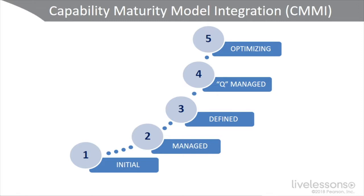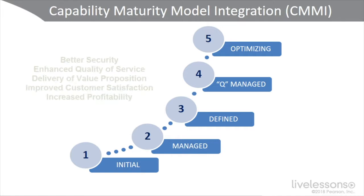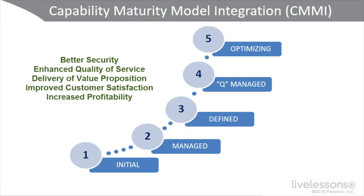What we see here is the Capability Maturity Model Integration, CMMI. This is a commonly used benchmark to look at capabilities and build mature operations by doing solid comparisons of your existing controls along with best practices. We use this to identify performance gaps and security gaps. Each level, from level one to level five, builds on the previous level for continual improvement. Our goals are better security, enhanced quality of service and products, efficient and secure delivery of our value proposition, improved customer satisfaction — internal and external — and, for profit organizations, increased profitability.